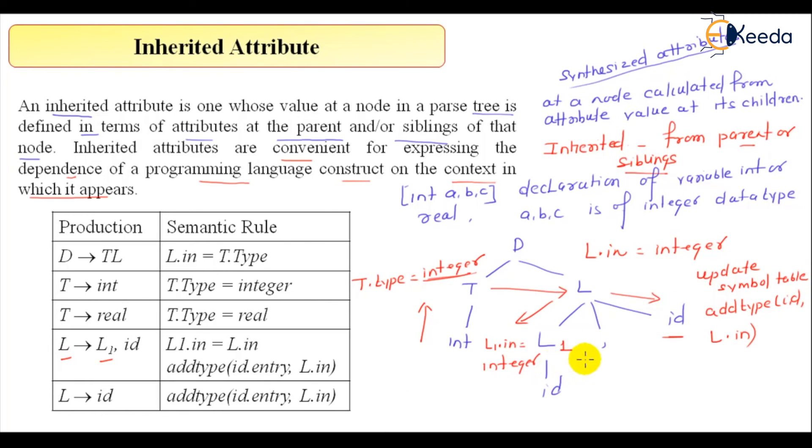Finally, L to id, so L to id is also, again, this will be, again, it is calling add type, add type to id dot entry, id dot entry, where whatever the entry in the symbol table and L dot in.